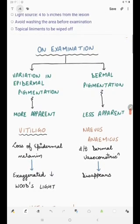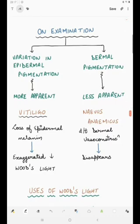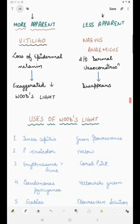On examination, Wood's lamp will respond differently to epidermal pigmentation and dermal pigmentation. If there is any variation in the epidermal pigmentation, it will become more apparent. For example, vitiligo. In vitiligo, there is loss of epidermal melanin. When vitiligo is examined under Wood's light, it will be exaggerated. The lesion of vitiligo will be exaggerated.